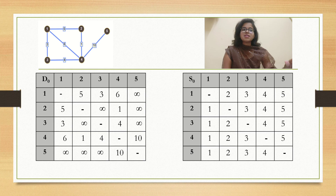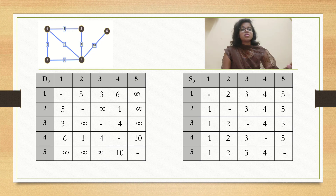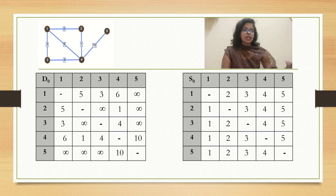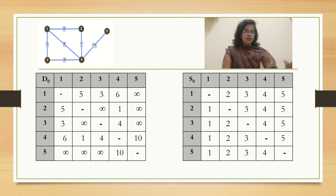D21 is again 5 since it is an undirected edge, so there is no particular direction and we can take D12 and D21 as the same. D23 is infinity because there is no edge between 2 and 3. D24 is 1. D25 is infinity because there is no edge between 2 and 5. D31 is 3 because there is an edge between 3 and 1 with edge weight 3. D32 is infinity. D34 is 4 and D35 is infinity. D41 is 6, D42 is 1, D43 is 4, D45 is 10. D51 is infinity, D52 is infinity, D53 is infinity, and D54 is 10 because the only edge from 5 is between 5 and 4.